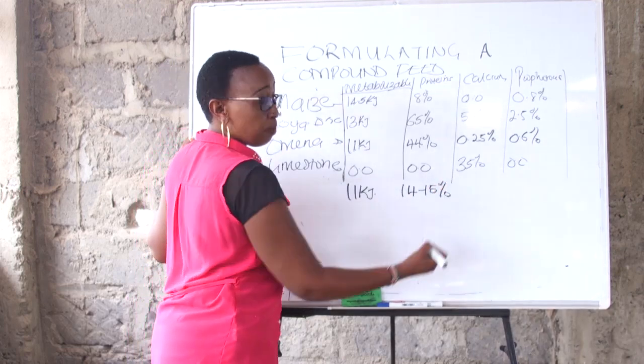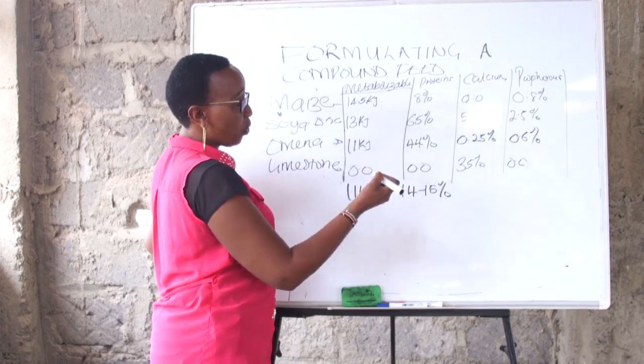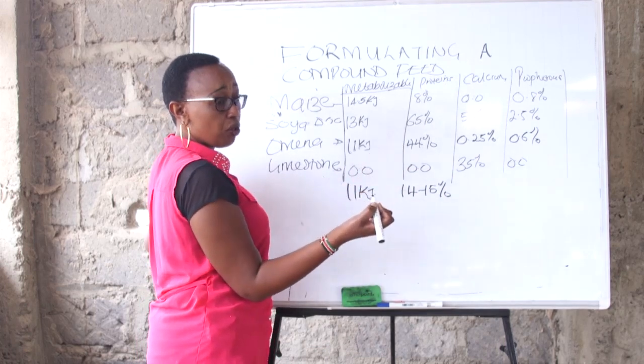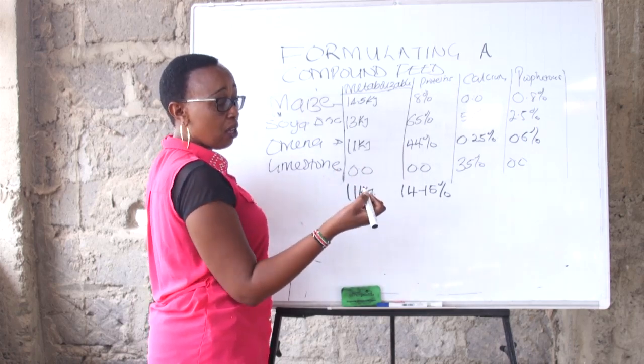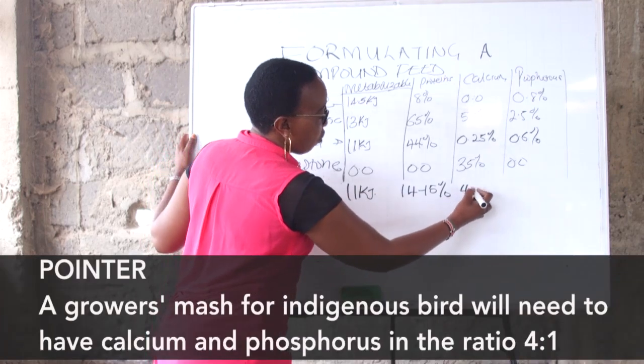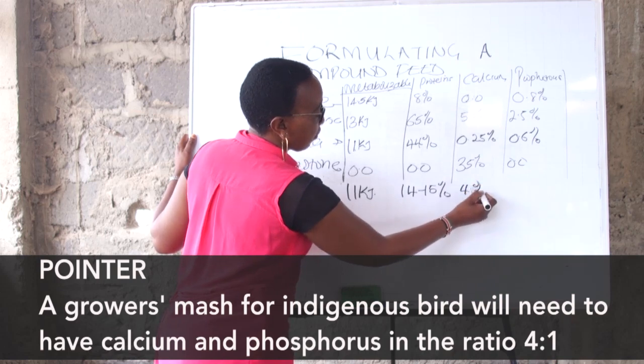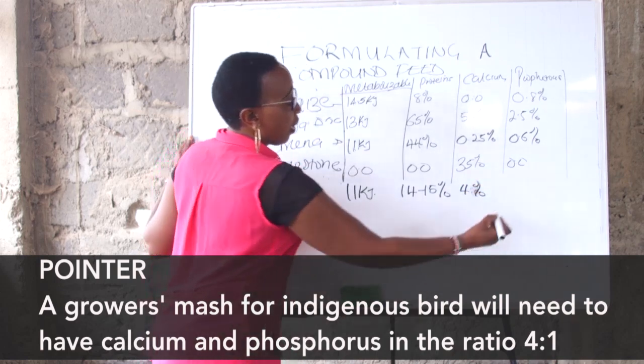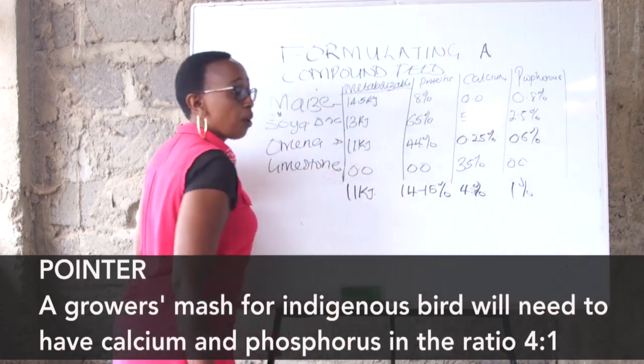Calcium: this bird is laying and it is from chick. We said that calcium is not to be used a lot in the chick, but this bird is a grower going to the laying stage. So if you do 4 percent calcium and then we can have our phosphorus as 1 percent.